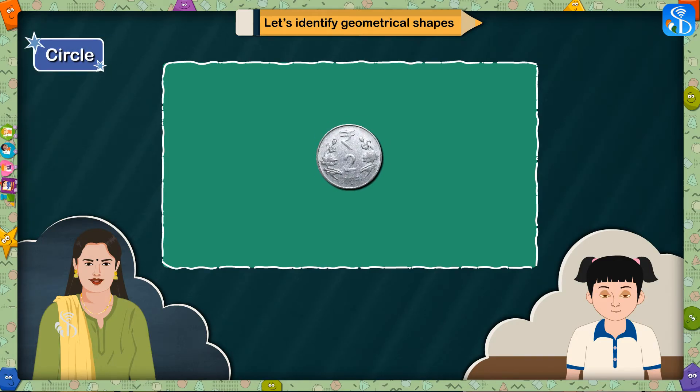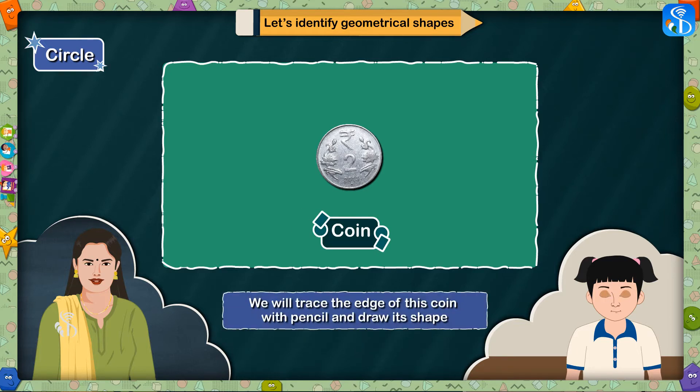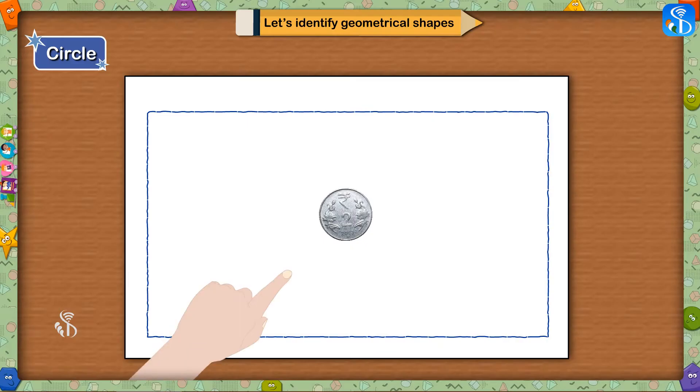Circle. Children, what is this? It is a coin. That's right. We will trace the edge of this coin with a pencil and draw its shape. This shape is known as a circle.